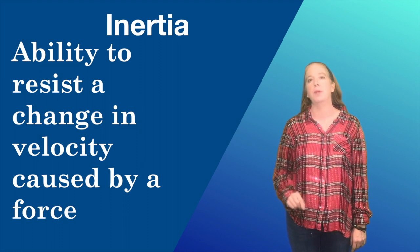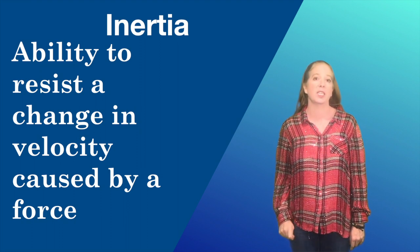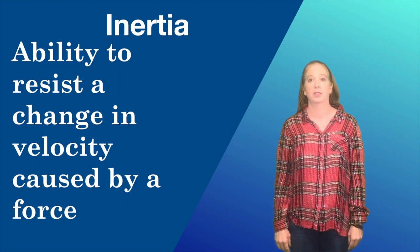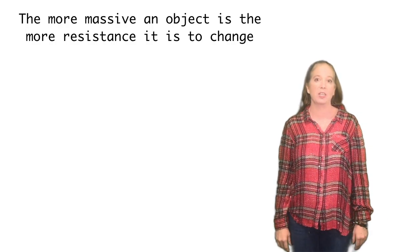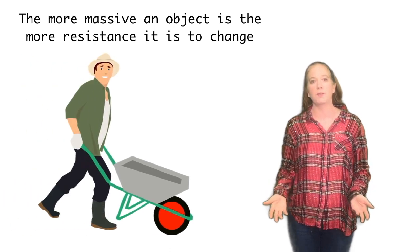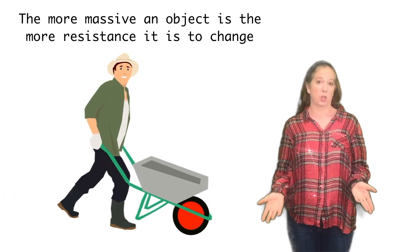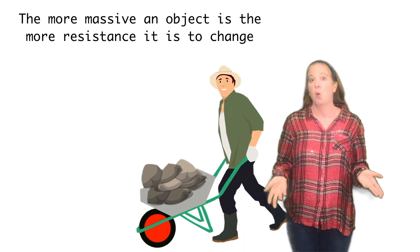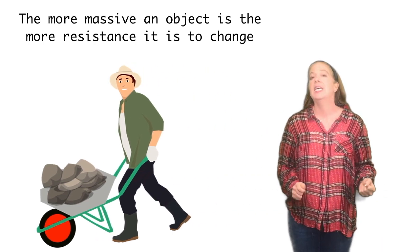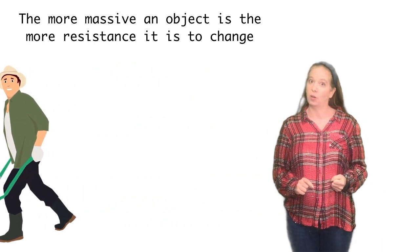Inertia is an object's ability to resist the change of velocity caused by a force. The more massive it is, the more resistant it is to change. So a farmer working in the field might find it easy to push a wheelbarrow when there's nothing in it. However, once it is filled with rocks, it's going to be a lot more difficult to move.